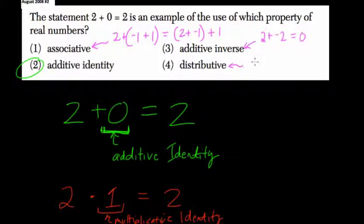And the distributive property is when you're multiplying a number over addition, let's say, or subtraction. So 3 times 2 plus 1 is, of course, 3 times 3.